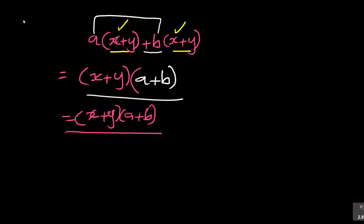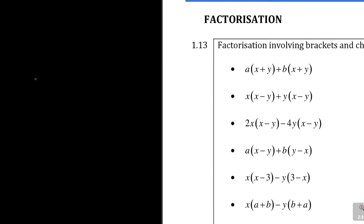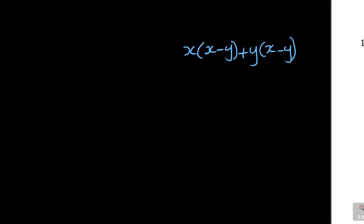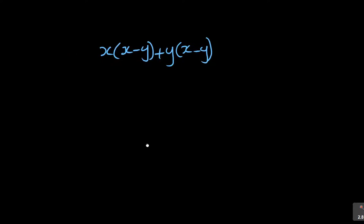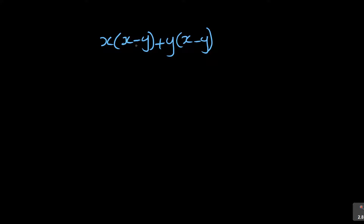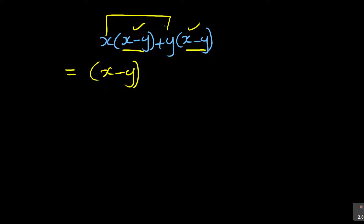That's the factorization done. Not difficult. Now let's look at the next one. We're factorizing X times bracket X minus Y, plus Y times bracket X minus Y. Same concept — look at the brackets. X minus Y and X minus Y, the brackets are the same. So equal to X minus Y. What is outside? I see X and Y, and the sign is plus. So you factorize to get X minus Y, times X plus Y.